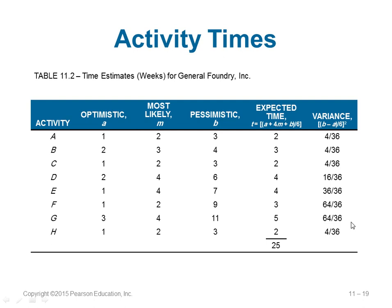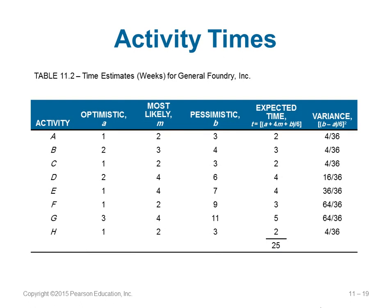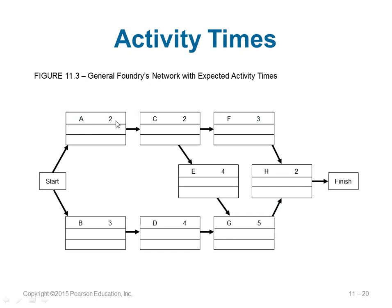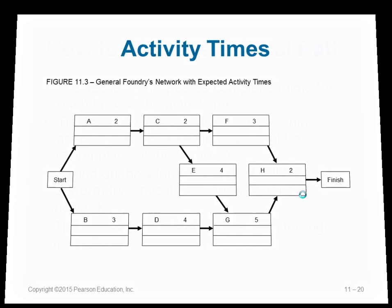Summing all the t values gives 25 weeks, but note that parallel activities are not counted in this sum. In the network representation, activity A has t = 2 weeks, C takes 2 weeks, F takes 3 weeks, and so on. To find the critical path — the actual longest path through the network — we need to account for parallel activities.